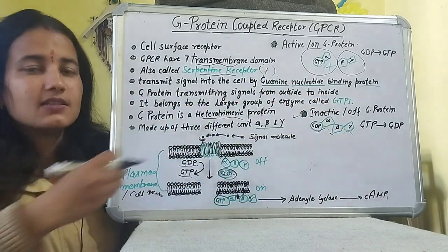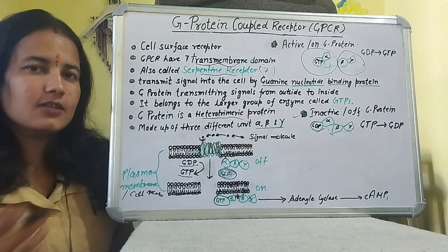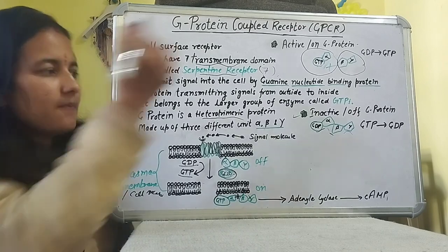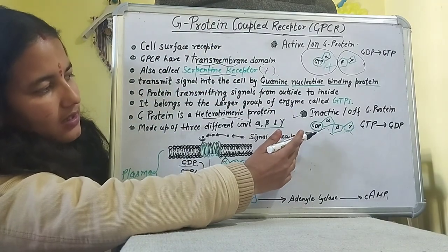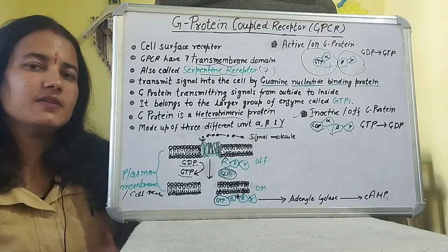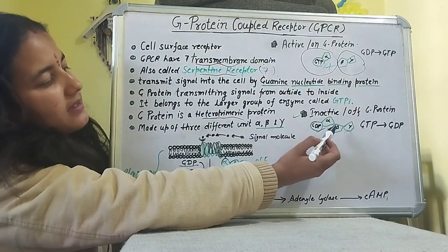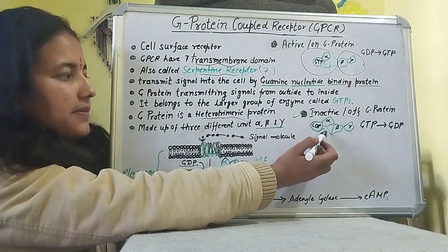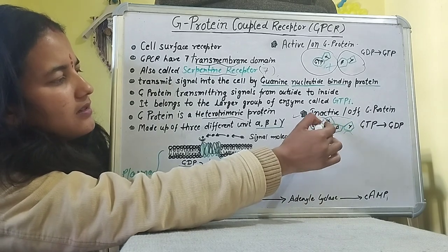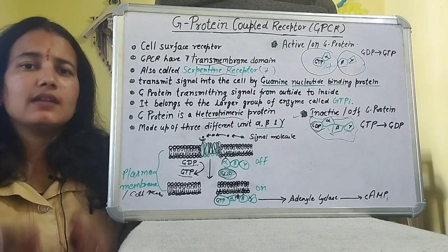When we talk about the inactive state, GDP remains bound to the G-protein. In this condition, the alpha, beta, and gamma subunits remain combined together — there is no breakdown or separation of subunits.